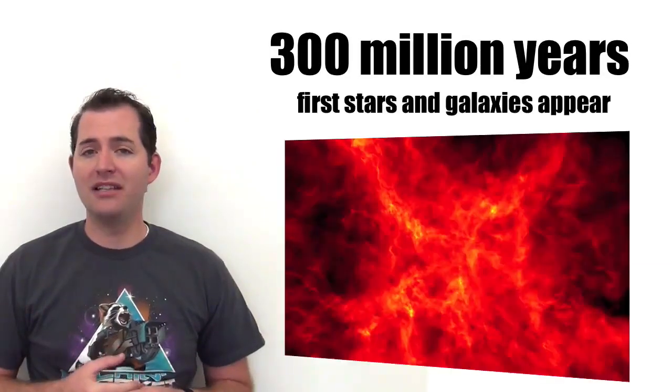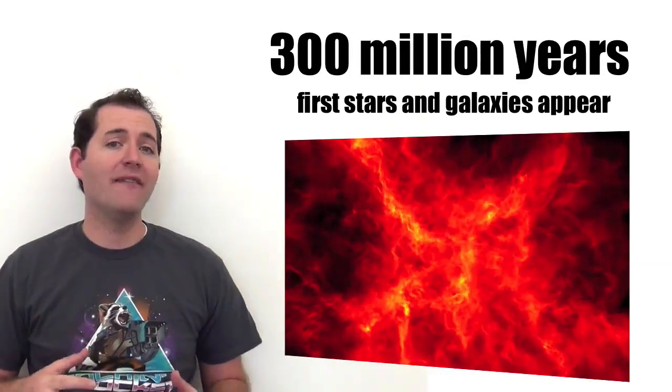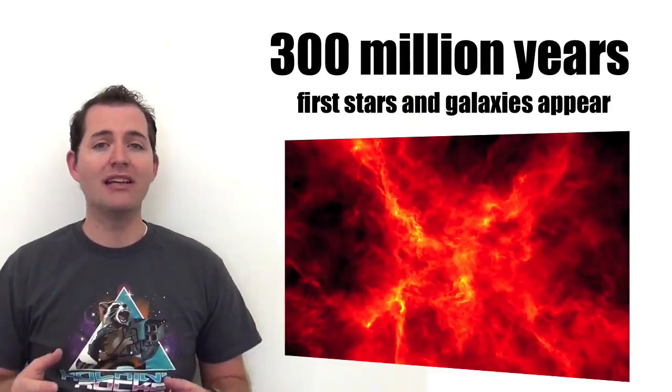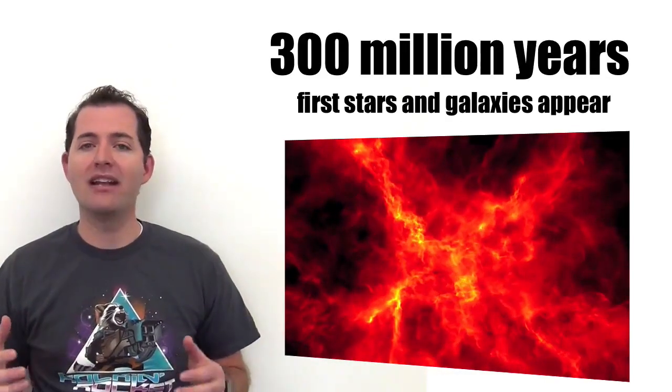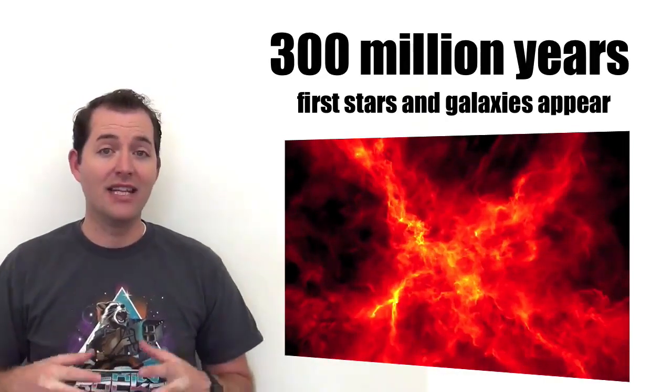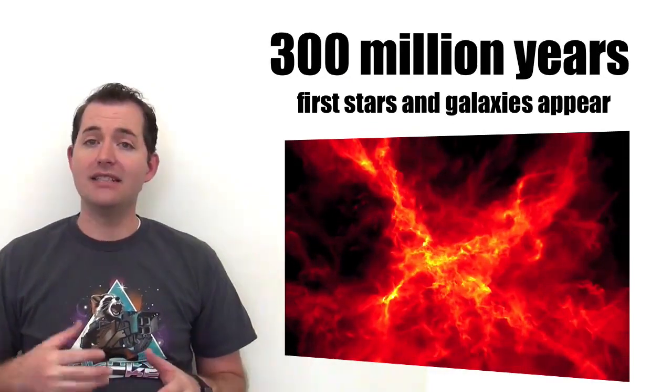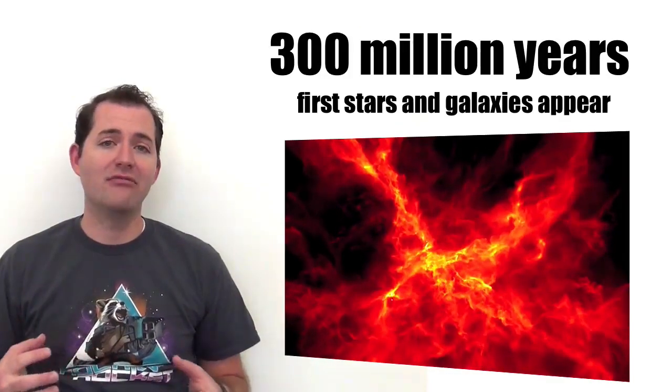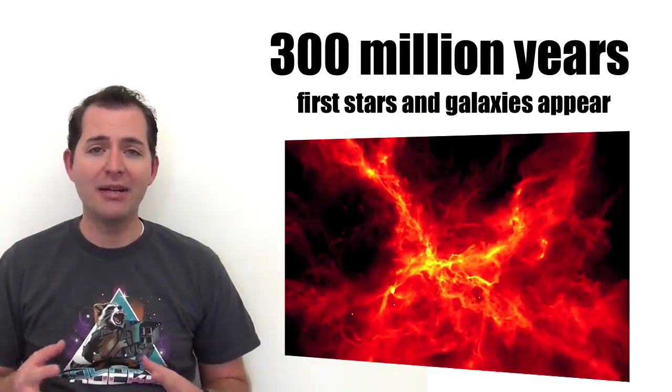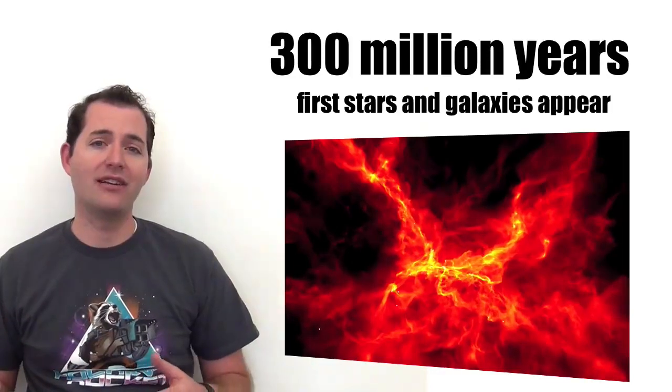About 300 million years following the Big Bang, gravity began to magnify the irregularities in the density of matter distribution in the universe. This was another key thing that was discovered using the COBE satellite. These irregularities in the density of matter throughout the universe began to be clumped together through the force of gravity.